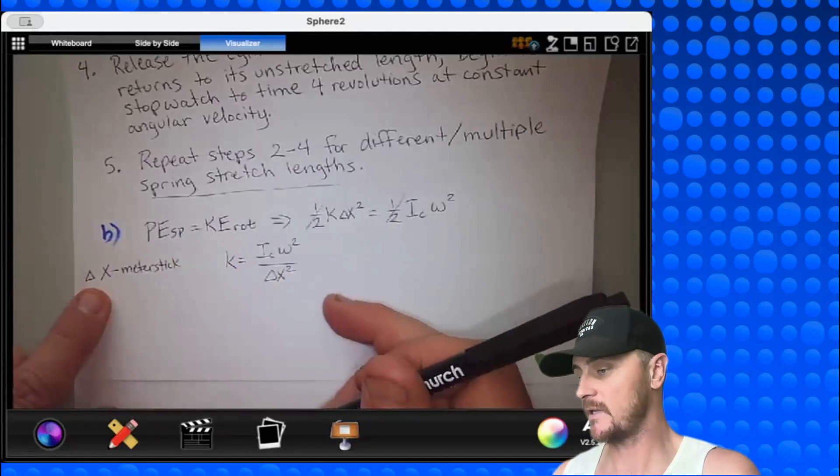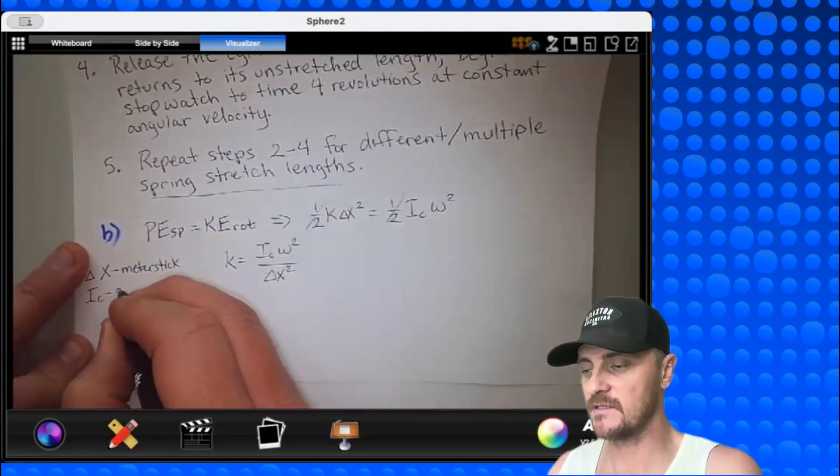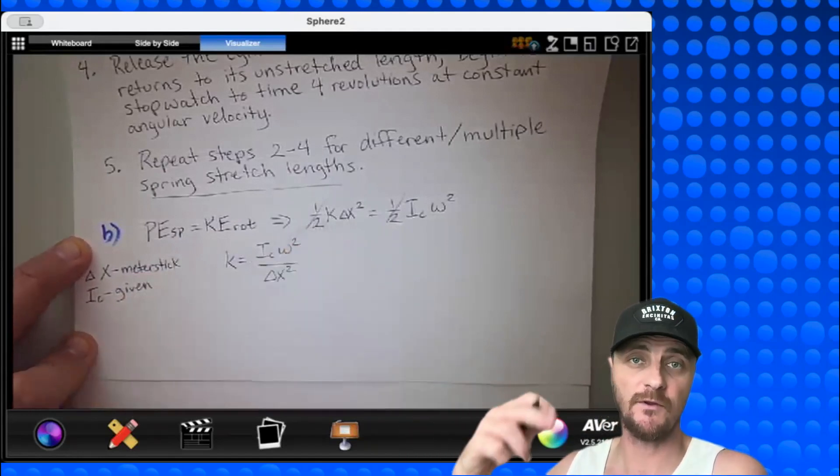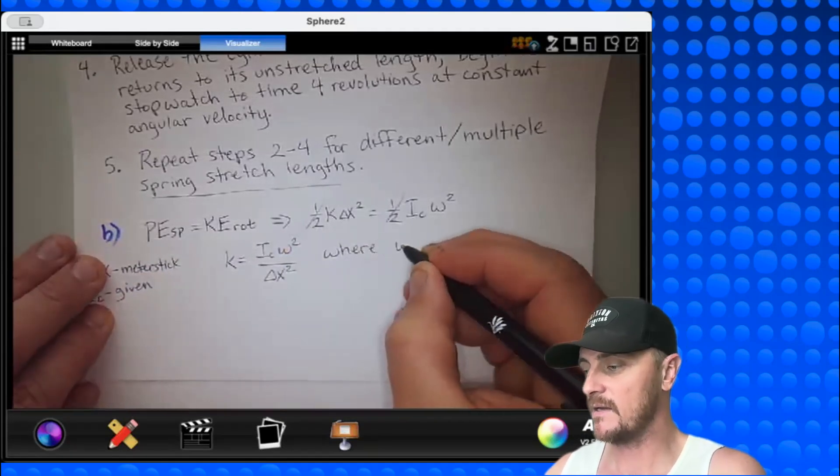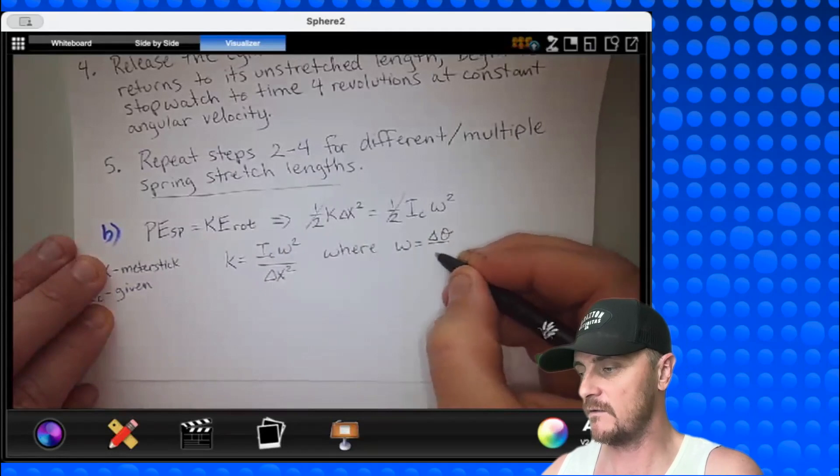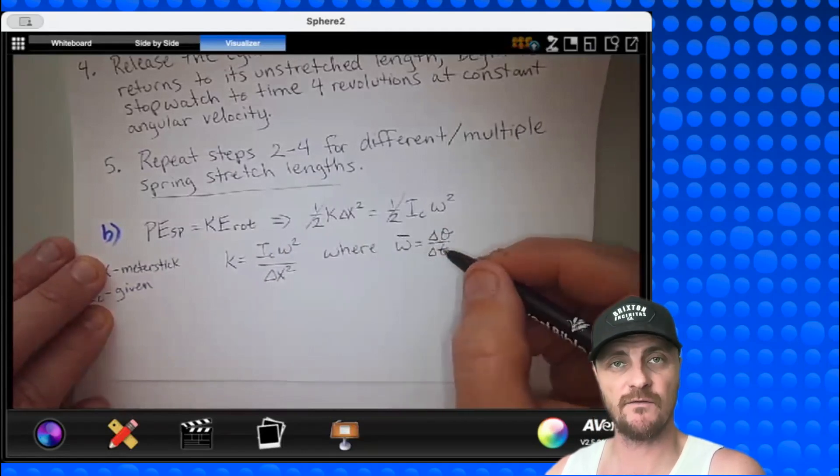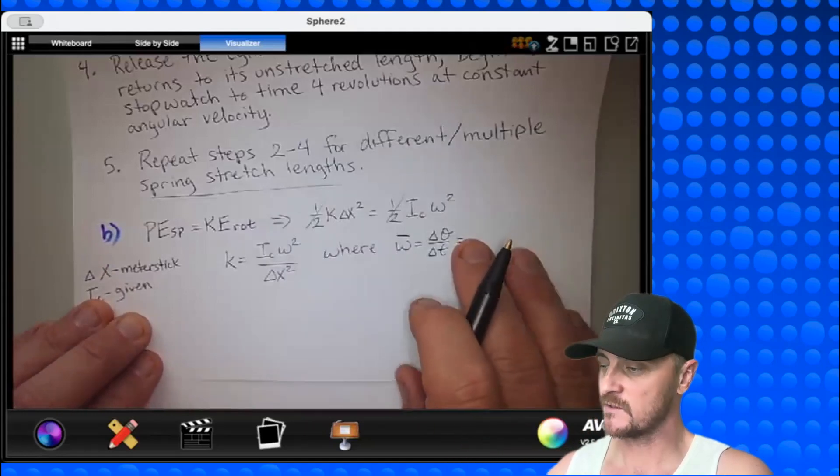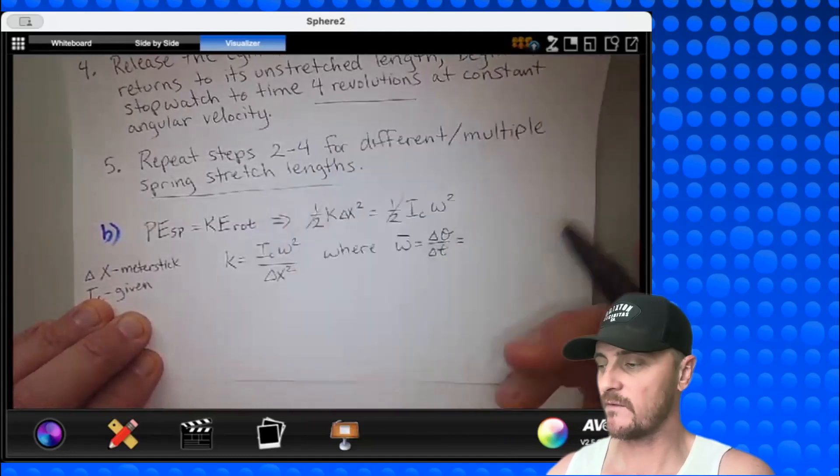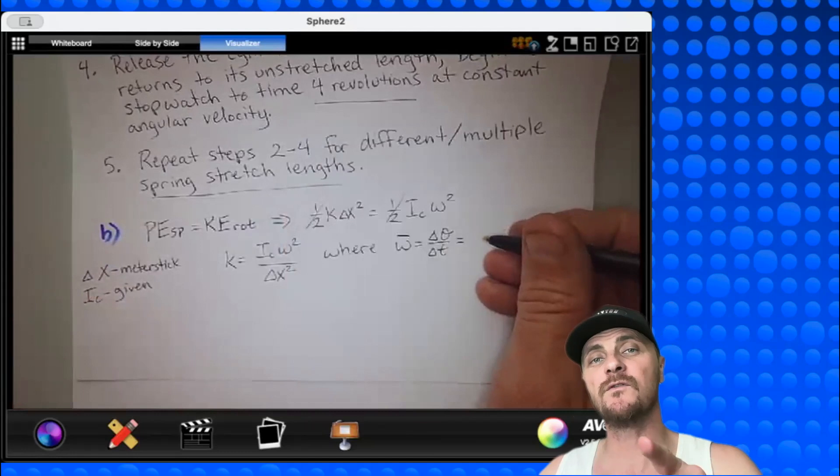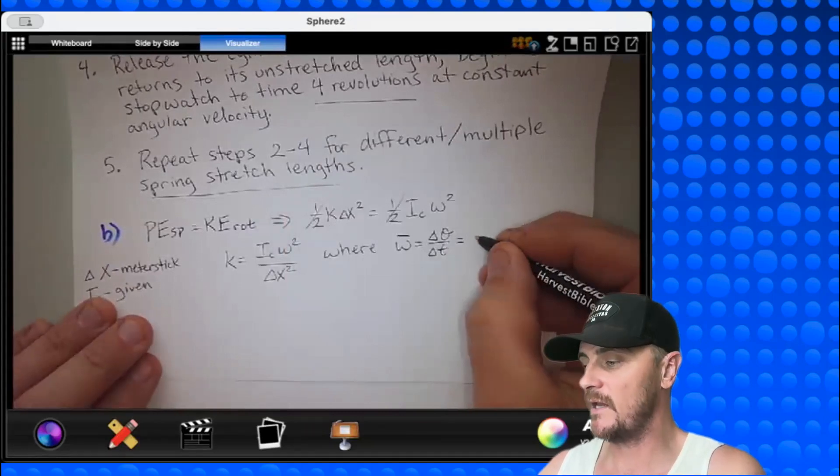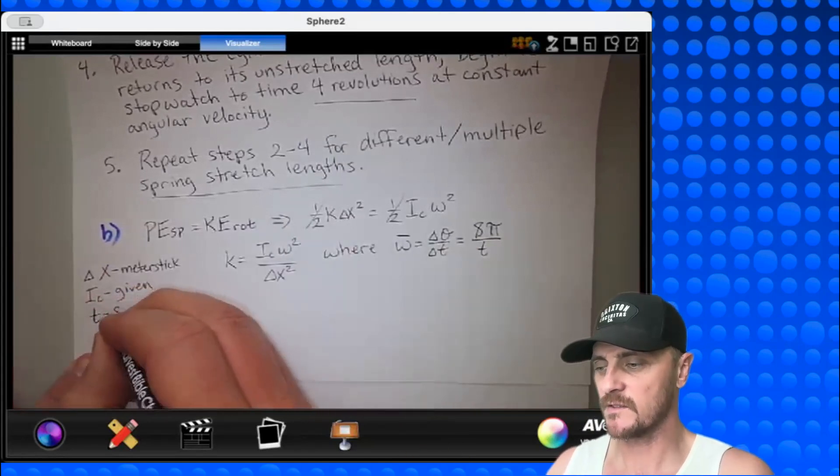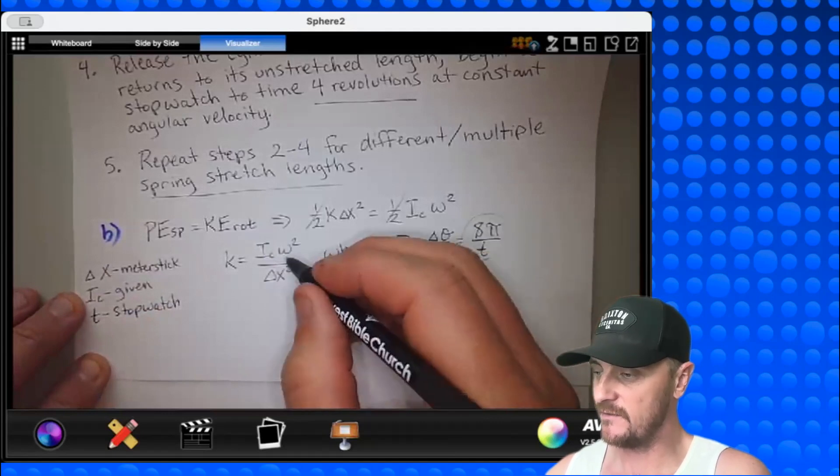I know delta x. That was from my meter stick measurements. So I'll put that right here. IC is given. I'm going to write that just to continue to brainstorm. But omega is not directly measured. We measured the amount of time it took for four complete revolutions. So I'm going to come over here and say where omega is equal to delta theta over delta t. And this is the equation for the average angular velocity because we know that cylinder is spinning at a constant rate when the spring comes back to its unstretched length. Okay, let's personalize this a little more for our procedure. We had four revolutions, which would be how many pi radians. Remember, one revolution is two pi radians. Therefore, this would be eight pi radians. And we don't need to put the unit divided by t, which we know from our stopwatch.